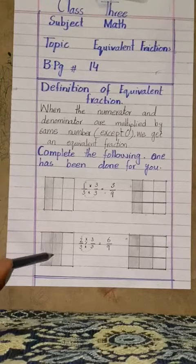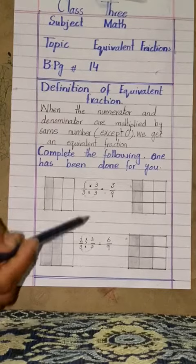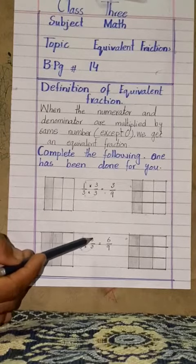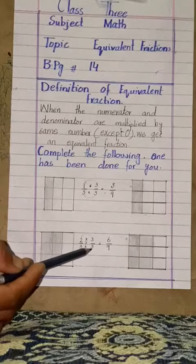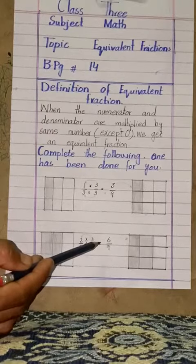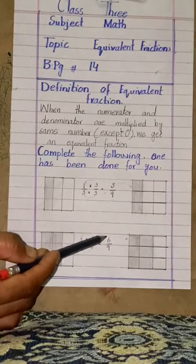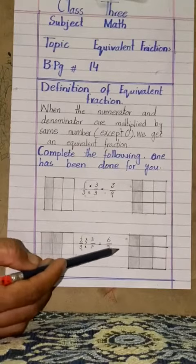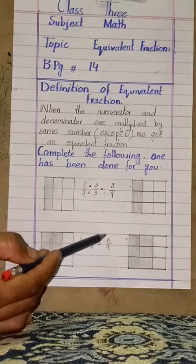These are 3 boxes, 2 are colored. Its fraction is 2 over 3. We will multiply 2 with 3 and 3 by 3, then we will get another fraction: 6 over 9. It means total 9 boxes should be, and 3...